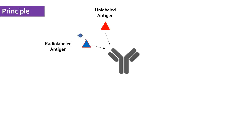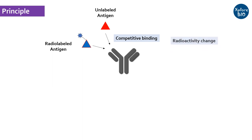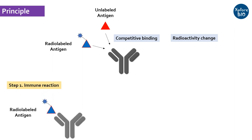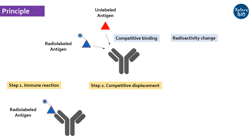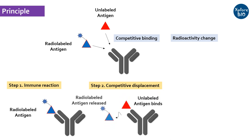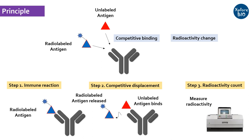RIA is based on competitive antigen binding to antibody that results in a change in radioactivity. It involves three basic steps. First, an immune reaction — that is, the labeled antigen and antibody binding. Second, a competitive displacement reaction in which labeled antigen bound to the antibody is displaced by unlabeled antigen from the patient serum sample. Third, measurement of the change in the ratio of emission by radioactive count.